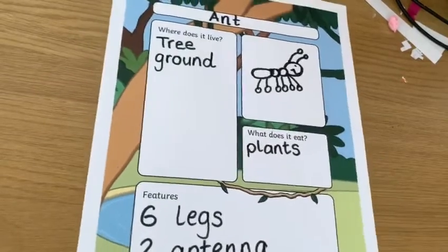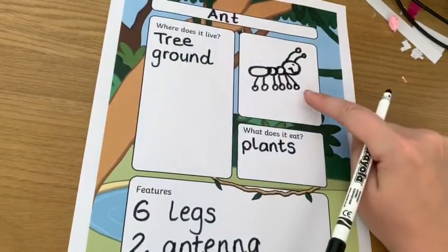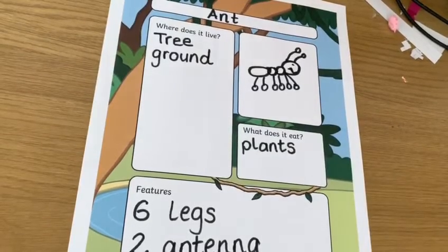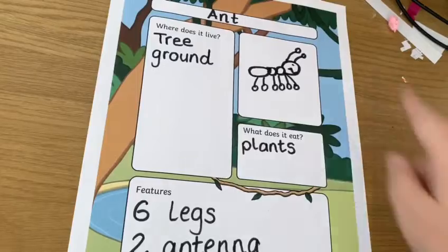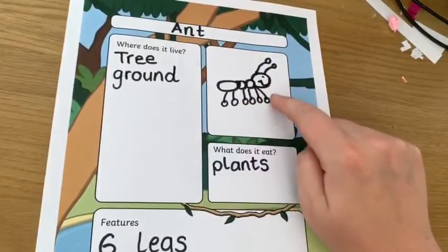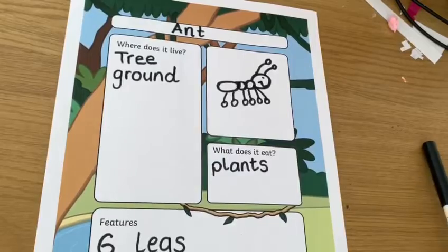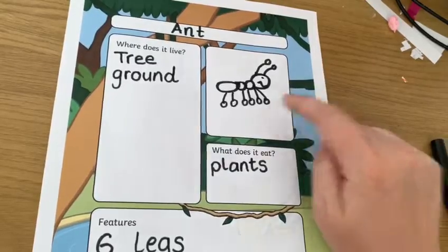This is my fact file about my ant. I could do another one about another mini beast that I found on my travels. Or instead of writing it down, I could draw a picture of my mini beast and tell a grown-up all about the animal that I found.